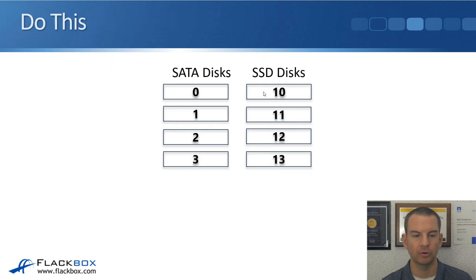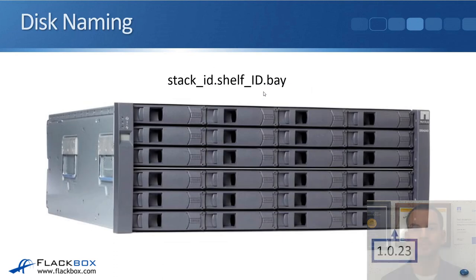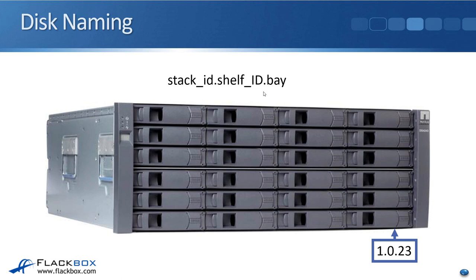Let's also cover the naming convention for individual disks. Because the controllers read and write data to individual disks, they need a way to identify each one. The naming convention is the stack ID, then a dot, then the shelf ID, then a dot, then the bay number. So for example, if a disk is in stack ID 1, shelf ID 0, bay 23, it would be identified as 1.0.23. The disk in the next bay would be 1.0.22.